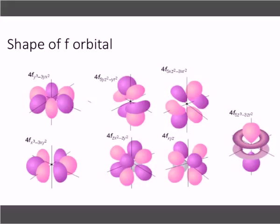What you need to take from all of this: SPDF — one, three, five, seven. Know the number of orbitals each sub-level contains. As far as shapes go, you've got to know that S is a sphere and P is a dumbbell. D you can call a clover, but S and P are the two shapes you need to know.